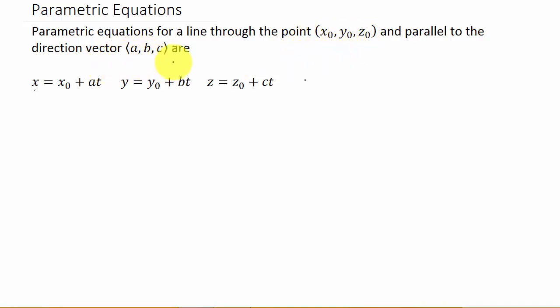So what we need is a point on the line, and we need a direction vector that's parallel. That's the two things that you have to have in order to find the parametric equations.